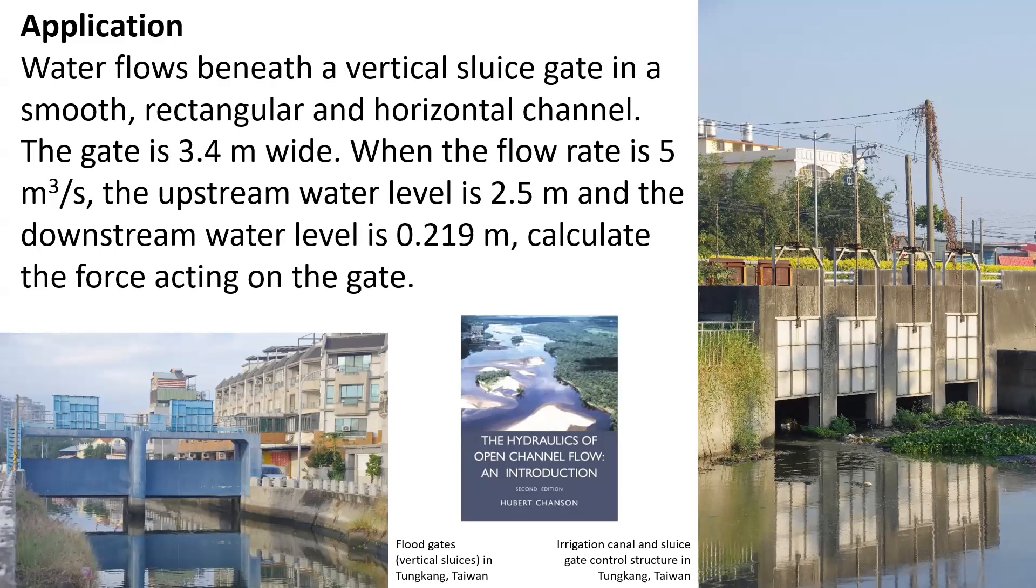An example of a vertical sluice gate is shown on this photograph here. We're considering a vertical sluice gate installed in a smooth horizontal rectangular channel 3.4 m wide. The flow rate is 5 m³/s, and the water depths upstream and downstream of the gate are respectively 2.5 m and 0.219 m. We need to calculate the force acting on the gate.